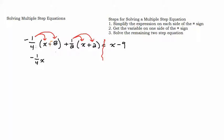Negative times a negative is positive, so I need a plus here. One-fourth times 8 — multiplying by one-fourth is the same as dividing by 4, so that gives 8 over 4, which is 2. Then one-half times x is one-half x, and one-half times 2 is 1 — half of 2 is 1. On the right-hand side, everything stays the same.